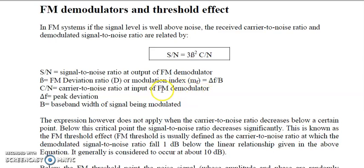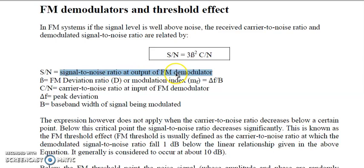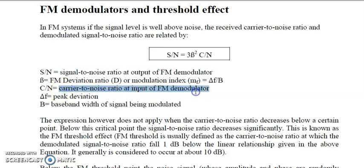C/N is the carrier-to-noise ratio at the input of the FM demodulator. At the input, we receive the carrier-to-noise ratio, while at the output of the FM demodulator, the demodulator provides the signal-to-noise ratio. The output of the FM demodulator can be considered as the receiver output — what we listen to or hear at the end of the receiver.